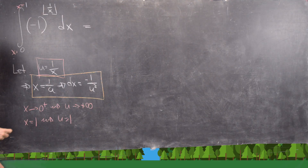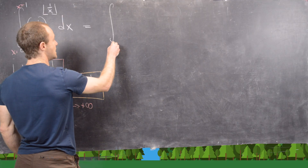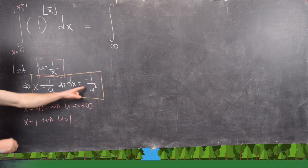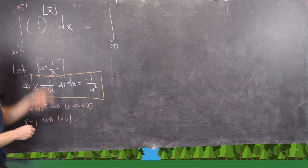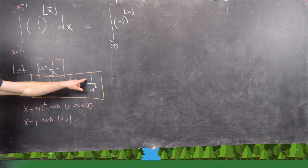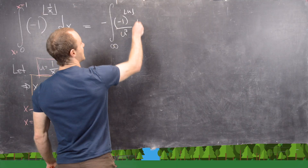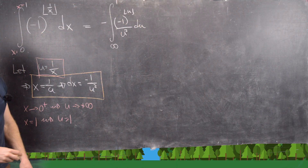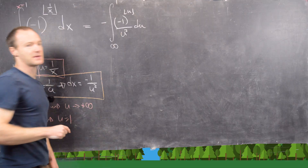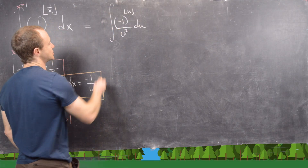That allows us to rewrite the integral completely in terms of u. We have the integral from infinity to 1 of (−1)^⌊u⌋ times (−1/u²) du. Taking that minus sign out front gives us minus the integral from infinity to 1 of (−1)^⌊u⌋ / u² du. We then use the minus sign to flip the bounds of integration to 1 to infinity.